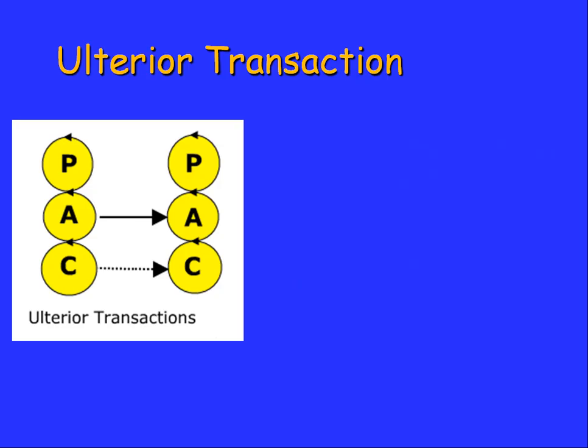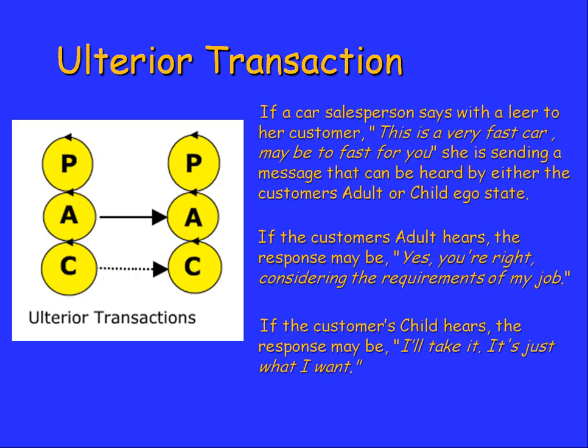Sometimes we have ulterior transactions — where apparently we're having an adult conversation but there's another agenda underneath. For example, a car salesperson says with a leer, 'this is a very fast car and it may be too fast for you.' This sends a message that can be heard by the customer's adult or child ego state. The adult might hear 'I'm a painter and decorator, I really don't need a Ferrari — I need a van.' But the child ego state might hear 'a fast car — I want one of those, and yes I can drive it,' and respond accordingly.